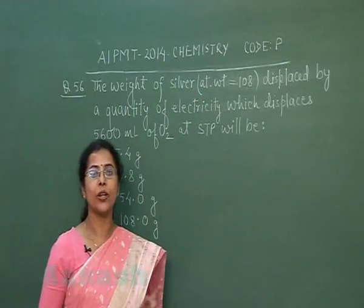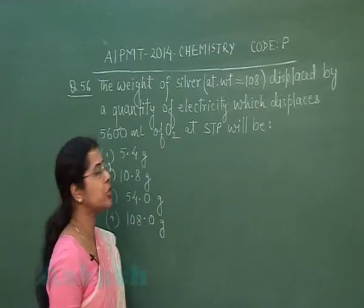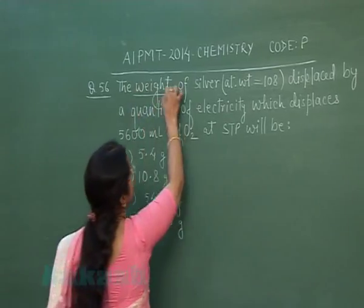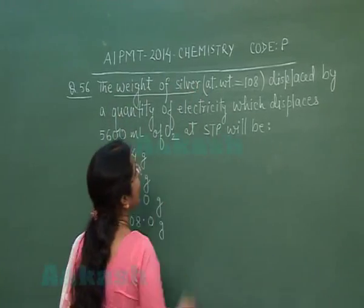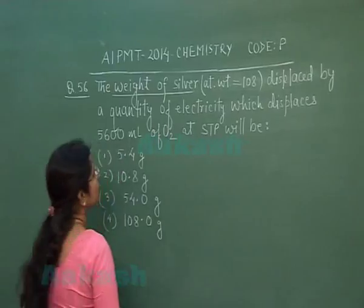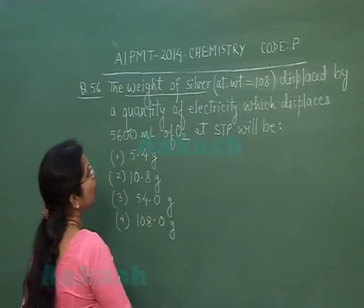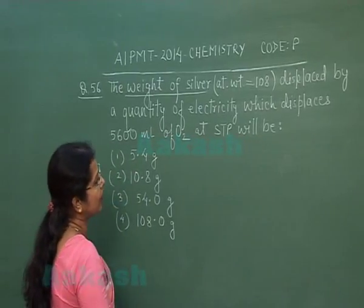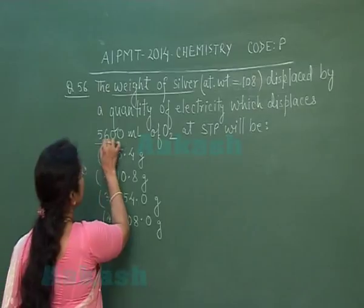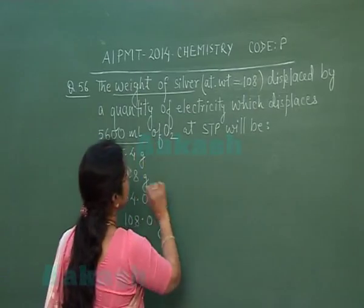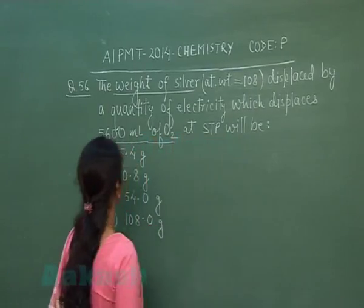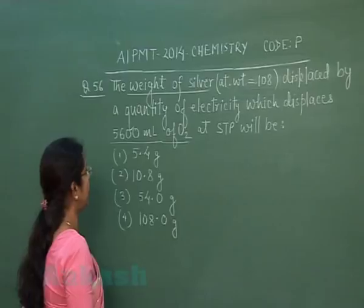Next question is question number 56. The weight of silver (atomic weight 108) displaced by a quantity of electricity which displaces 5600 milliliters of oxygen at STP will weigh?